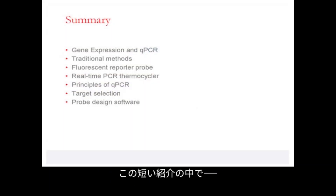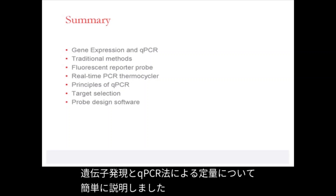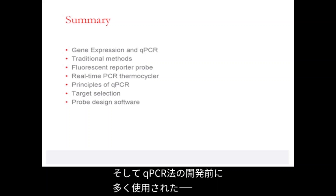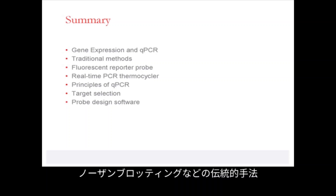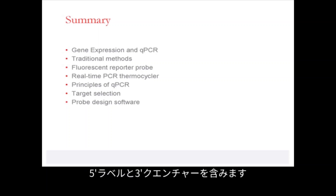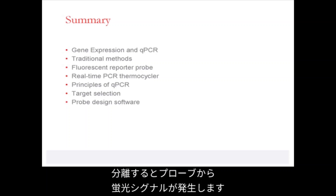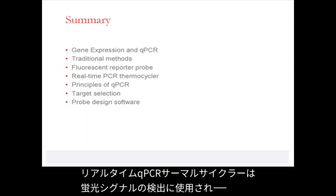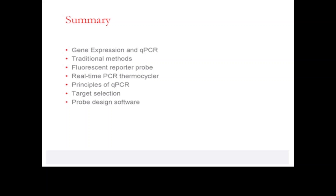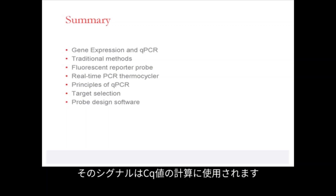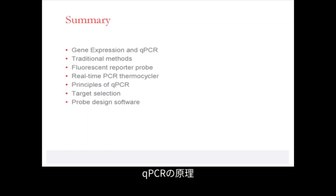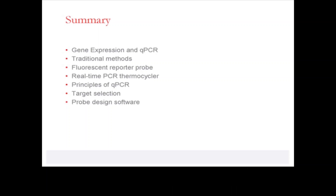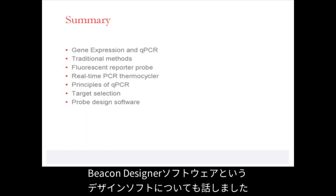In this introduction, I briefly described gene expression and quantification using qPCR; traditional methods such as northern blotting, which was used frequently before the invention of qPCR; fluorescent reporter dye chemistries, which involve a 5' label and a 3' quencher that once separated releases the fluorescent signal from the probe; the real-time qPCR thermocycler, which detects signals used to calculate CQ values; the principles of qPCR; target selection such as DNA, RNA, or both; and our probe design software, Beacon Designer.